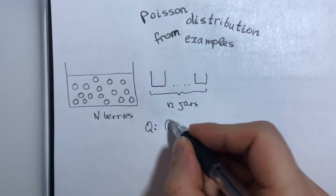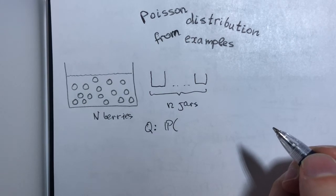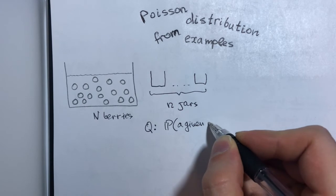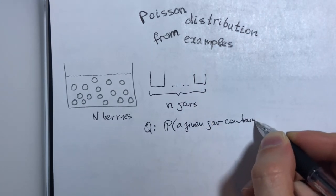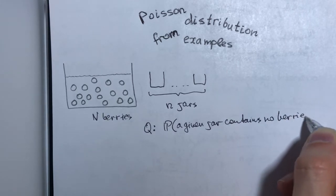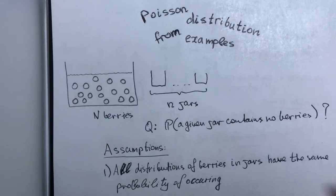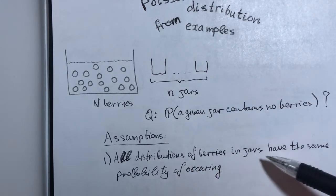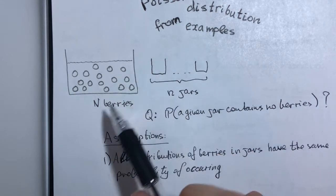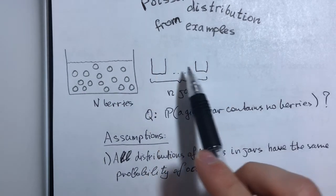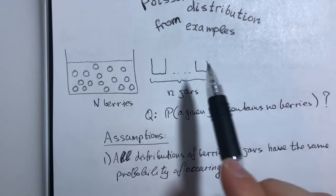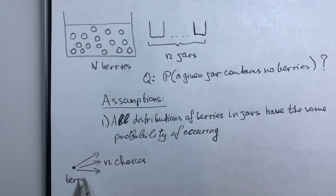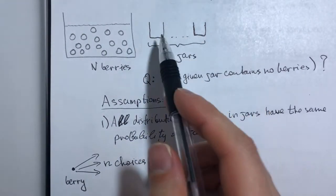Suppose that all this amount fitted inside little n jars. Let us discuss the following interesting question: what is the probability of a given jar containing no berries? Before we start, let us declare the following assumption: we want all distributions of berries in jars to have the same probability of occurring. That means I can have all of my big N berries in one jar and none in others, or I can have them equally distributed. We don't regard one distribution of berries more likely than any other.